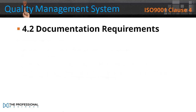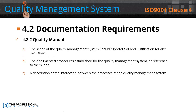4.2.2 Quality Manual. The quality manual shall include: a) The scope of the quality management system, including details of and justification for any exclusions; b) The documented procedures established for the quality management system or reference to them; and c) A description of the interaction between the processes of the quality management system.